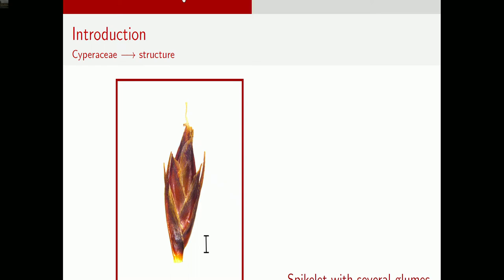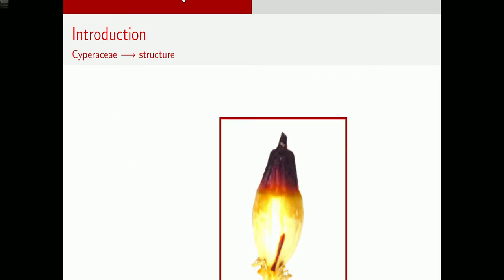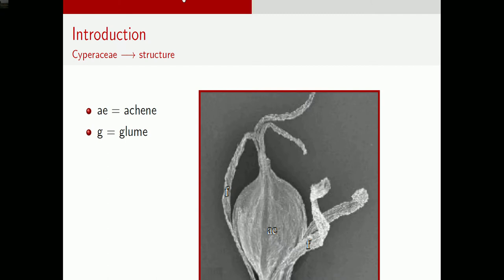If you zoom in further, this is a basic Cyperaceae diagram. You have the ovary, style, two stigmas, and three anthers — following the monocot rule of three. This is an idealized Cyperaceae flower, showing what you might see underneath the glumes in the spikelet. The fruit — which I call a nutlet when doing taxonomy — is an achene, with glumes coming out and then the achene becoming the hard fruit.